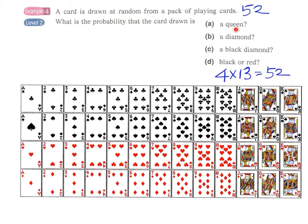And now we can come to part A. What is the probability that the card drawn is a queen? So we have 4 queens here. We have the club queen, spade queen, heart queen, the diamond queen. Therefore, the answer for part A will be 4 over 52. We have 4 favorable outcomes because we have 4 queens and we have a total of 52 possible outcomes. So this will be 1 over 13.